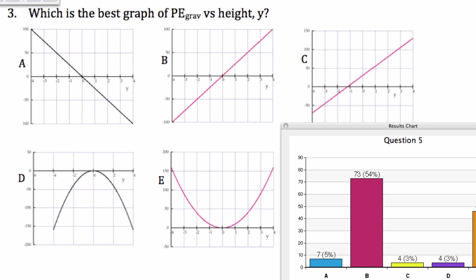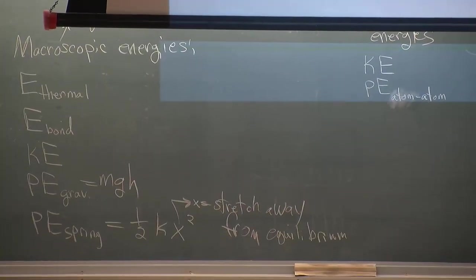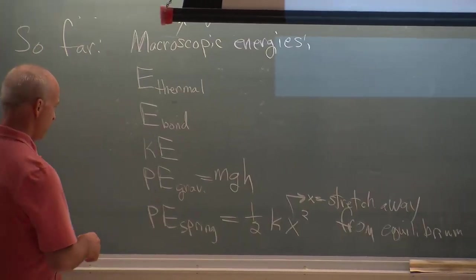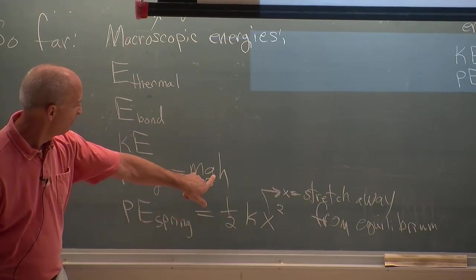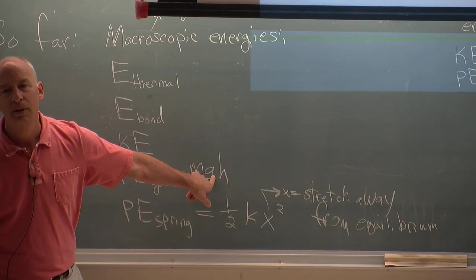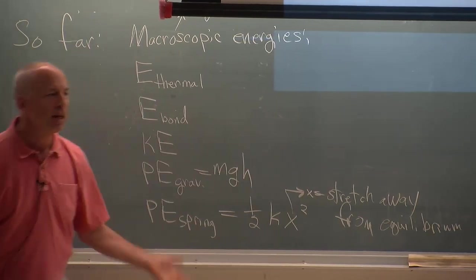Gravitational potential energy is a linear function of the height. If you think of this as an equation for a line, this is the slope times the height and there's zero intercept. So what I wrote right there is a line through zero.